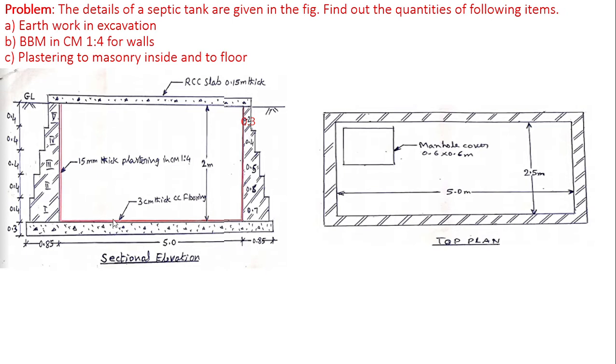The floor should be given a slope of about 1 in 20 for the convenience of collection and removal of the sludge. Septic tank may also be built with stone masonry, precast or cast in situ cement concrete.